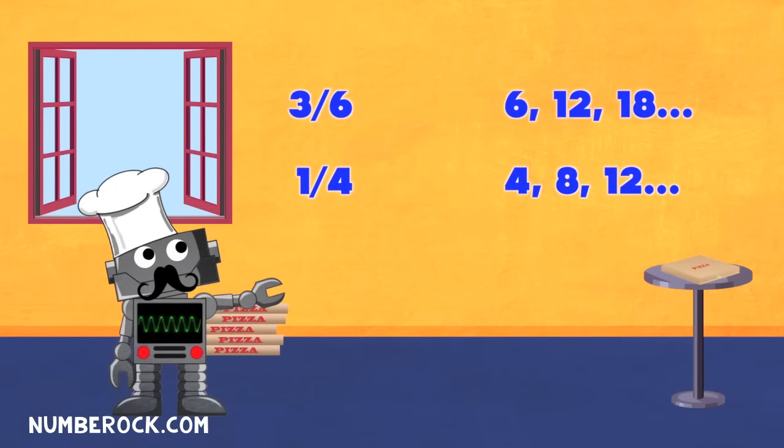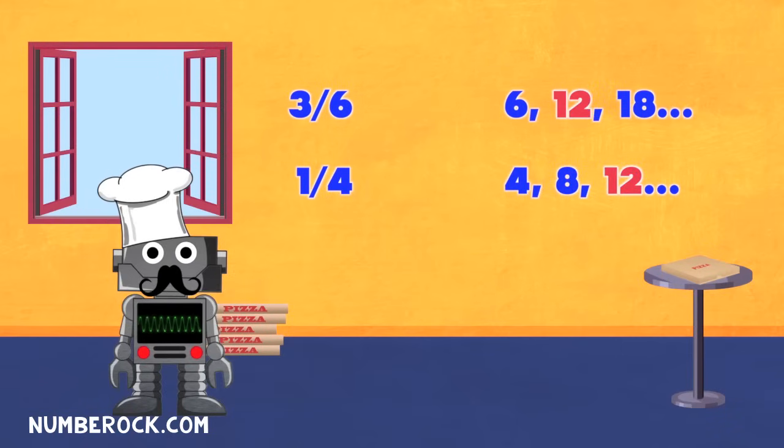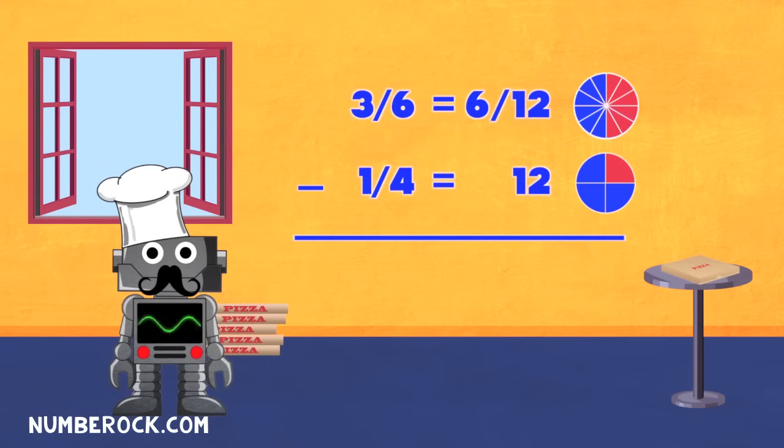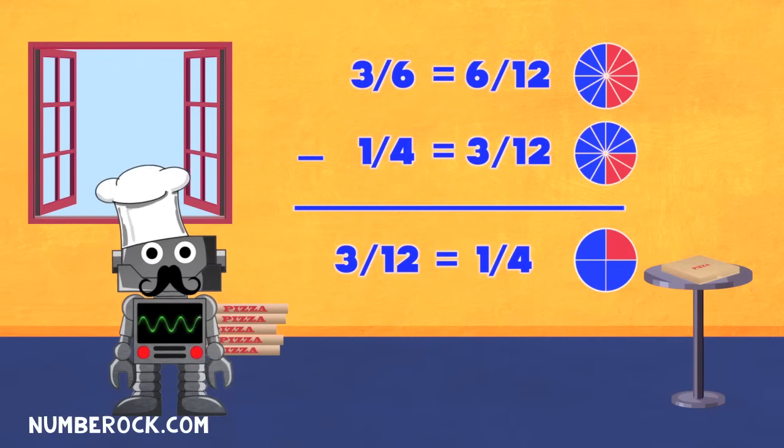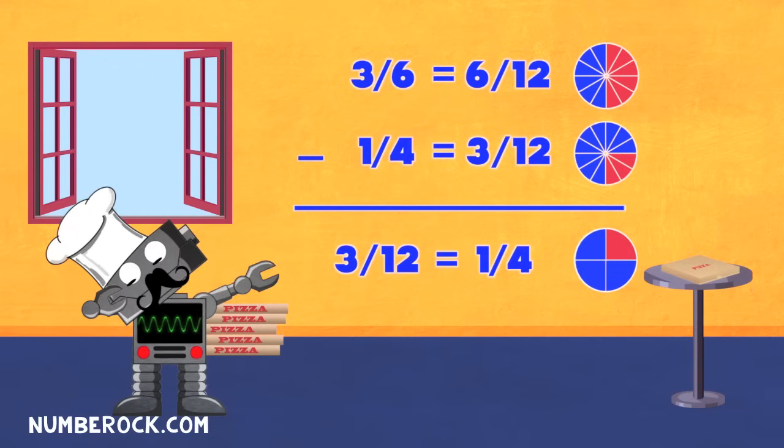Find the least common multiple, that's the first action. Next is finding equivalent fractions, then do the addition or subtraction. Simplify like an automatic reaction.